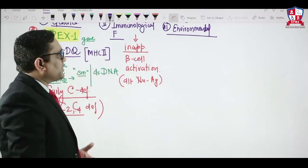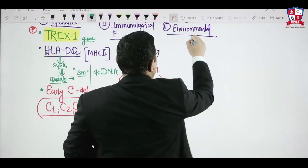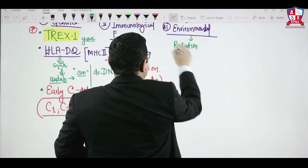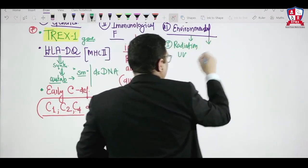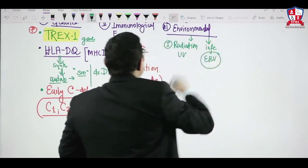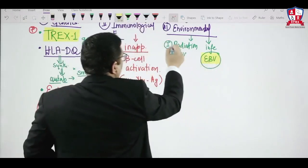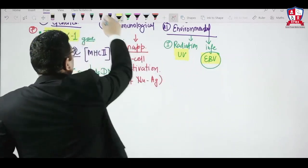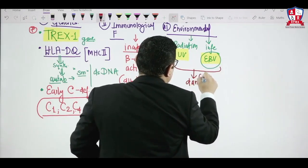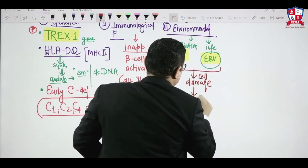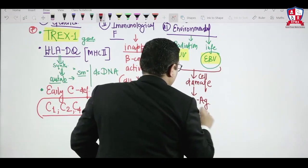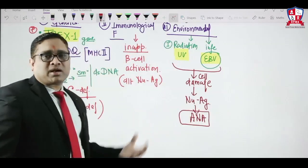Environmental factors include ultraviolet light radiation and Epstein-Barr virus infections. These can cause damage to cells, exposing nuclear antigens. Because of nuclear antigen exposure, anti-nuclear antibodies are formed — this is how anti-nuclear antibodies develop in SLE.